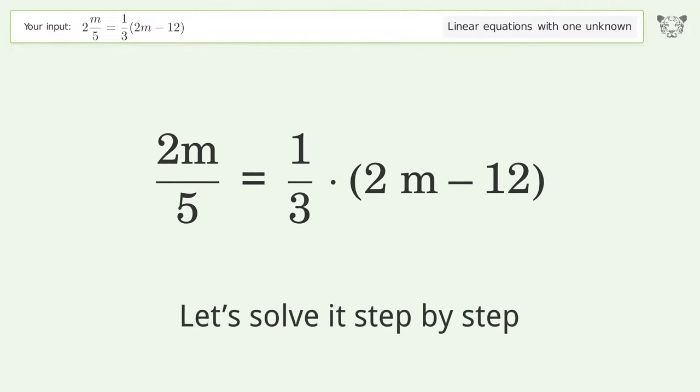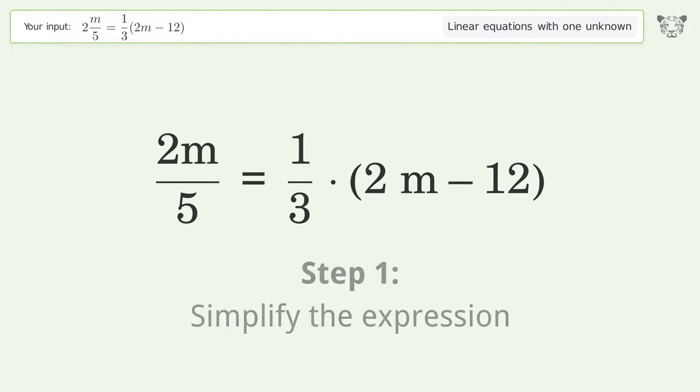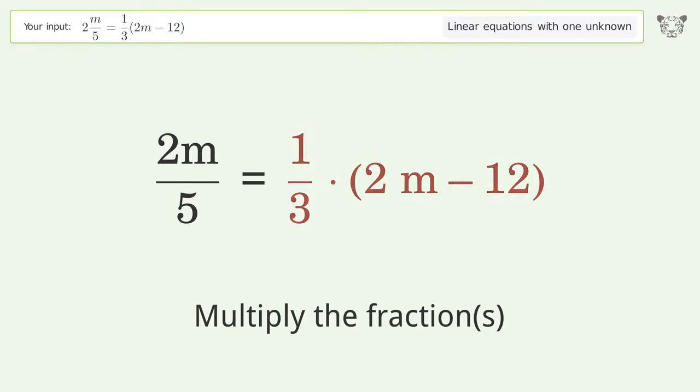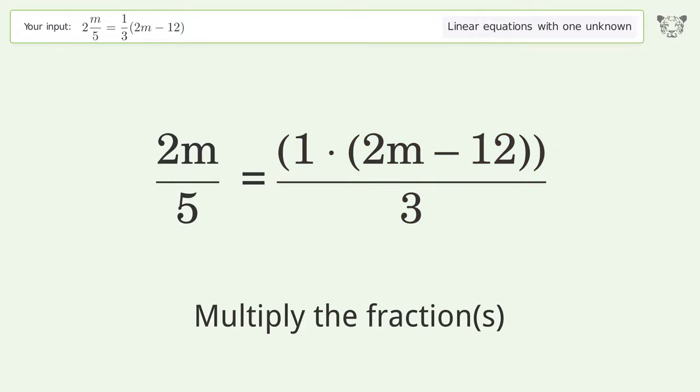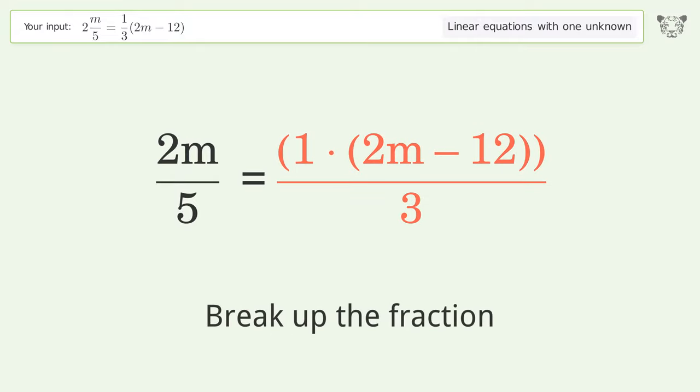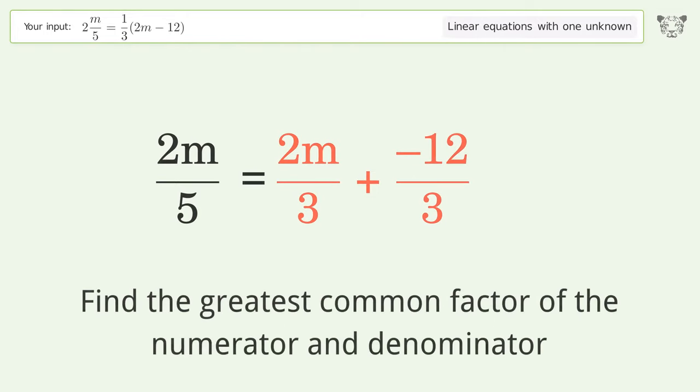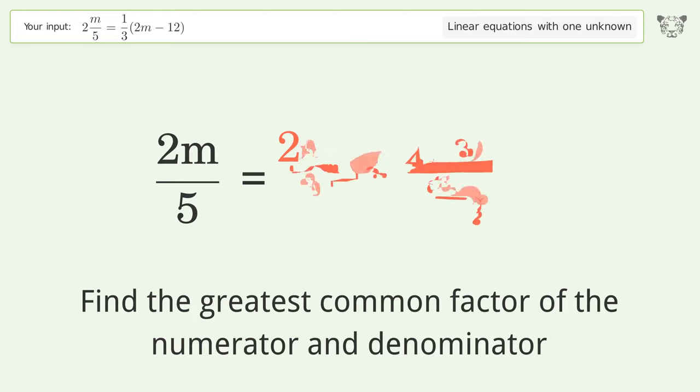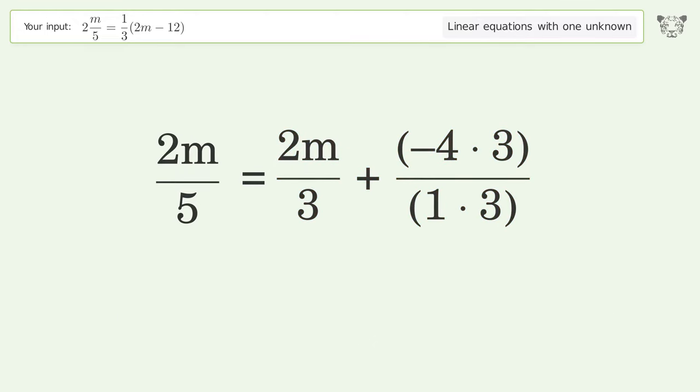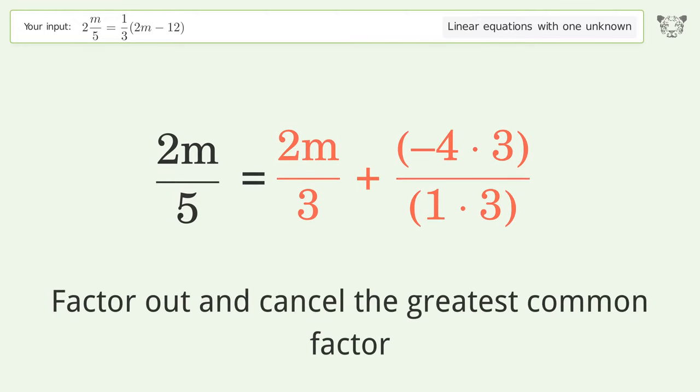Let's solve it step by step. Simplify the expression, multiply the fractions, break up the fraction, find the greatest common factor of the numerator and denominator. Factor out and cancel the greatest common factor.